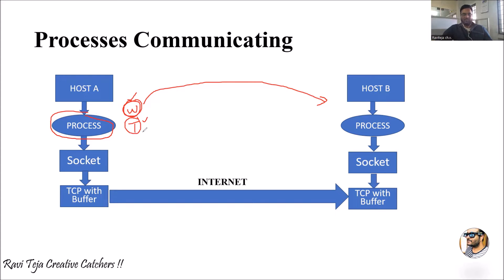A process is the execution of that particular application, its instructions, or software. As we are using two apps — WhatsApp and Telegram — each application will have its own unique port number. Let's say WhatsApp is Port 1 and Telegram is Port 2. Each unique software application is allotted a unique port through which communication is done, so there is no mismatch in transmission and reception between apps.